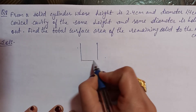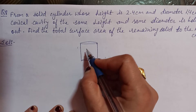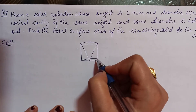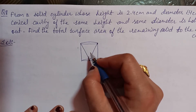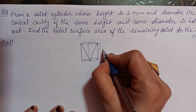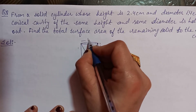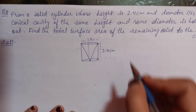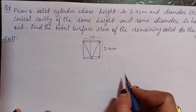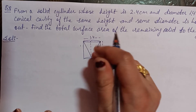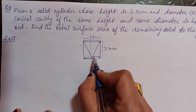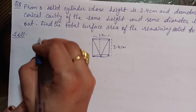First, draw the figure. You have a cylinder, beta. A conical cavity of the same height and same diameter is hollowed out from the solid cylinder. Height is 2.4 cm, diameter is 1.4 cm. When the figure is solid, the outer curved surface area of the cylinder comes, and the base area at the bottom also comes. Add all these together.